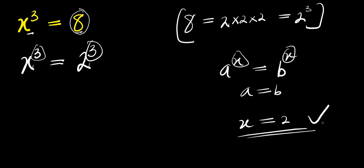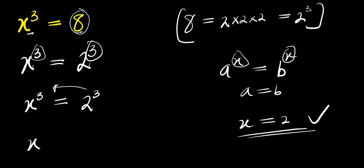Now to solve for all the values of x is what we are going to do. We have x power 3 equals 2 power 3. I will move this over here and this will be x power 3 minus 2 power 3.